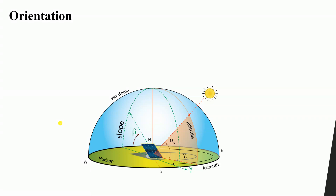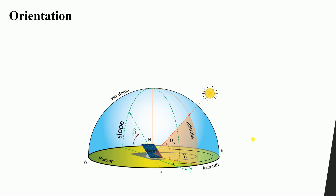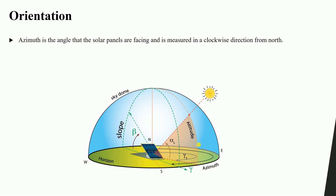In this lesson we will talk about the orientation of solar panels. We talked before about the tilt angle — how much the panel will be inclined from the horizontal position. Now let's talk about something really important: the orientation of the panels, meaning which direction I'm going to direct my panels — south, east, west, or north. This is related to something called the azimuth.